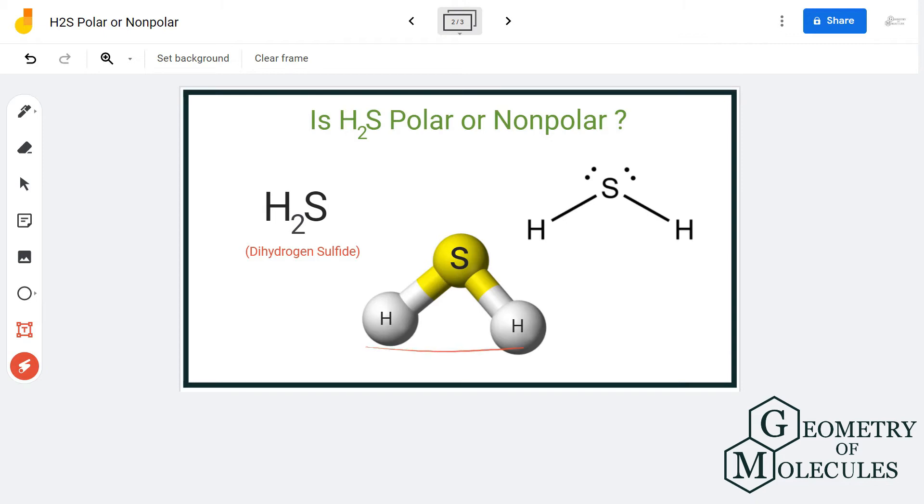To understand that better, let's look at its structural formula. The central atom here is the sulfur atom, and both hydrogens are pushed downwards because of the two lone pairs on the sulfur atom.